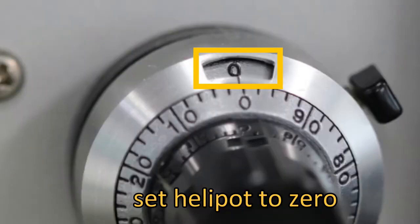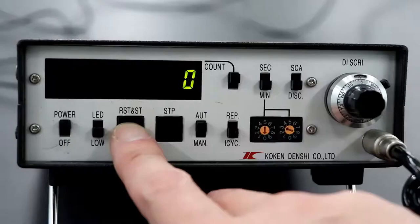For the background measurement, set the helipot to zero. Now we are ready to measure. Now let's start the measurement by pressing the start button.